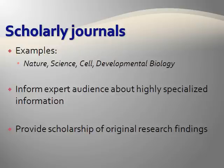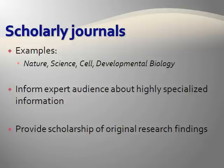Scholarly journals contain highly specialized information written by experts in a given field. The primary purpose of such publications is to share scholarship of original research findings with others in the field. It is important to note that all scholarly journals are not respected equally. Many in biology consider the journals Science and Nature as the definitive journals. Another example, the journal Cell, established in 1974, keeps pace with the times by advancing and disseminating fundamental knowledge in a variety of areas.